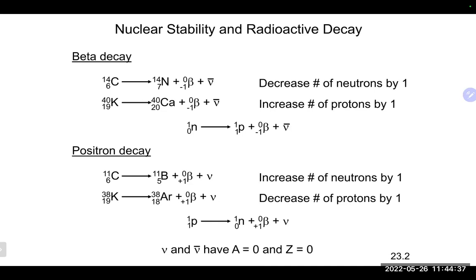In beta decay—represented by the beta symbol or the letter E for electron—we decrease the number of neutrons by one and increase the number of protons by one. There's also a neutrino produced, but we don't need to worry about it. What happens is a neutron gets converted into a proton, which is why you increase the atomic number by one. That is where the beta particle comes from as the neutron is converted into a proton.